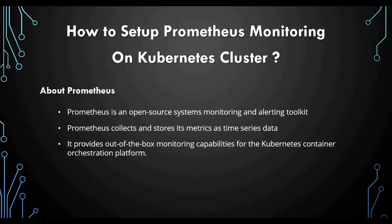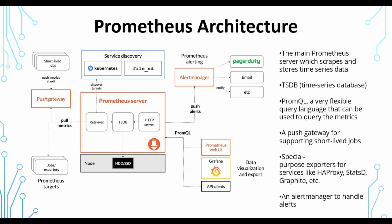Going back to our discussion on Prometheus monitoring for Kubernetes cluster - Prometheus collects data and saves these metrics as time series data, and it also gives out-of-the-box monitoring capabilities for containers and the Kubernetes orchestration platform. We already used Prometheus for monitoring Docker, and now we are going to use it for Kubernetes. Let's see a little bit of the architecture. The main component is the Prometheus server, which has a time series database.